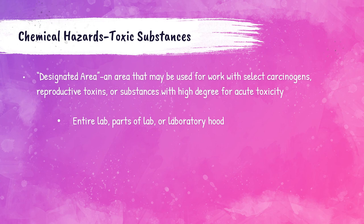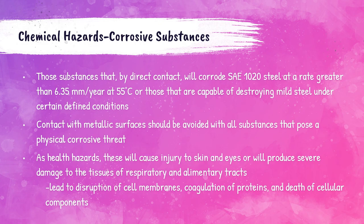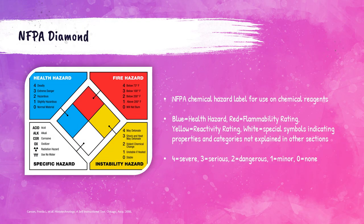The designated area is an area that may be used for work with select carcinogens, toxins that affect reproductive health, or substances with a high risk of acute toxicity. The designated area can be the entire lab, a particular area of the laboratory, or a fume hood — it depends on each laboratory and their practices. Corrosive substances are those that with direct contact will corrode SAE 1020 steel at a rate greater than 6.35 nanometers per year at 55°C, or are capable of destroying mild steel. As health hazards, corrosive substances cause injury to skin, eyes, and severe damage to the respiratory and alimentary tracts.